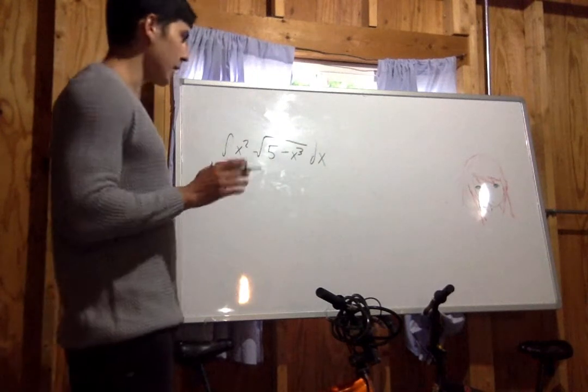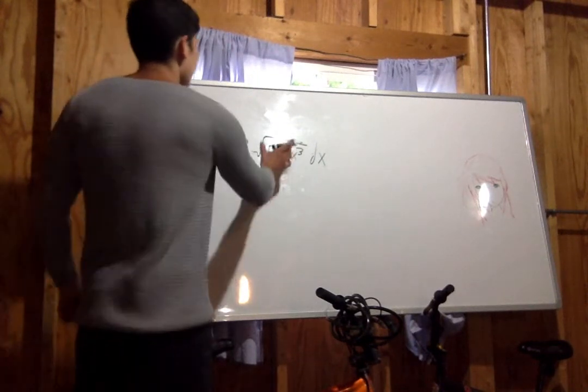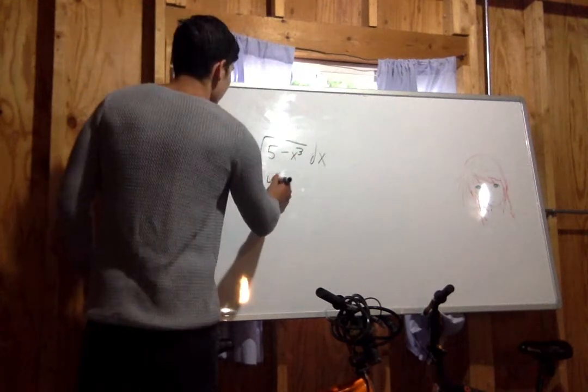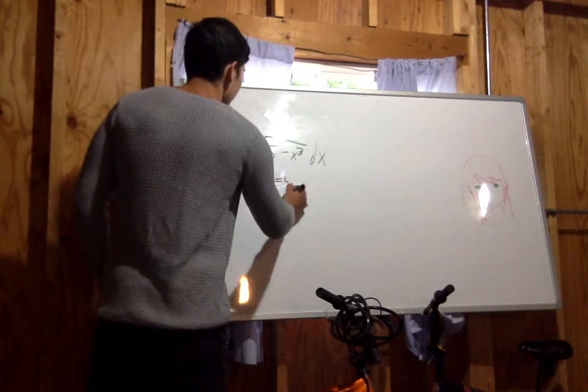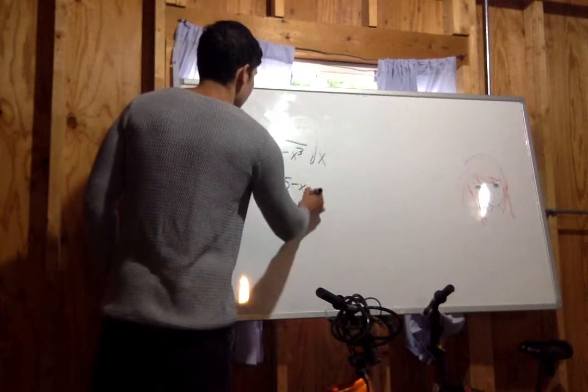The first step is to take what's inside the root and let u equal that. So u equals 5 minus x cubed.